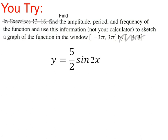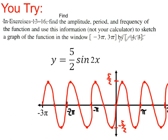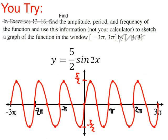Now you try one — pause the video, then I'll show the solution curve. Here is my curve: notice that this one, due to the 2x, was counterintuitively a horizontal shrink. So instead of a period of 2π, this function completes a full cycle in just π units. If anything didn't make sense, you know what to do — come see me.